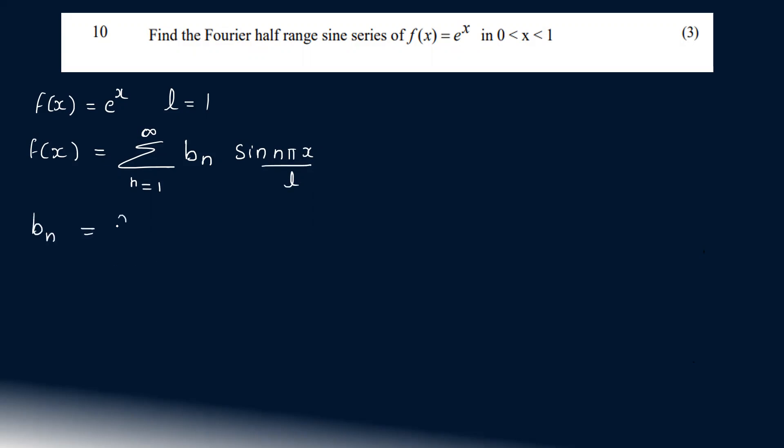bn is equal to 2/L integral 0 to L of f(x) into sin(nπx/L) dx. That is equal to 2 from 0 to 1, f(x) = e^x, that is equal to sin(nπx) dx.